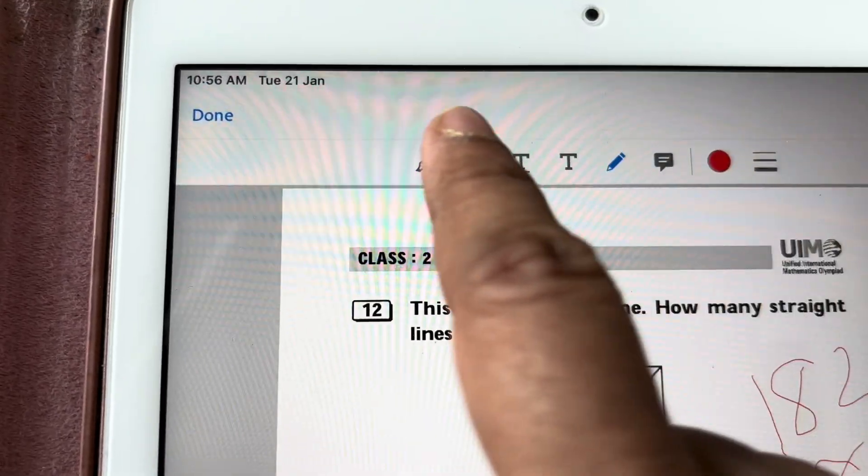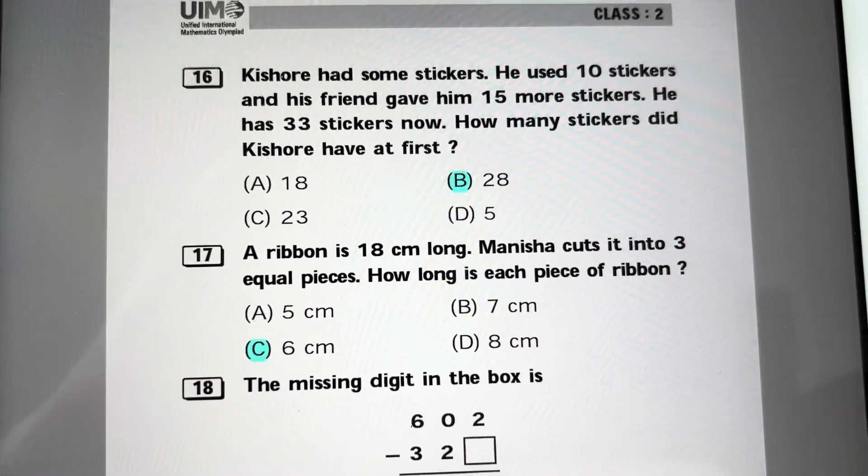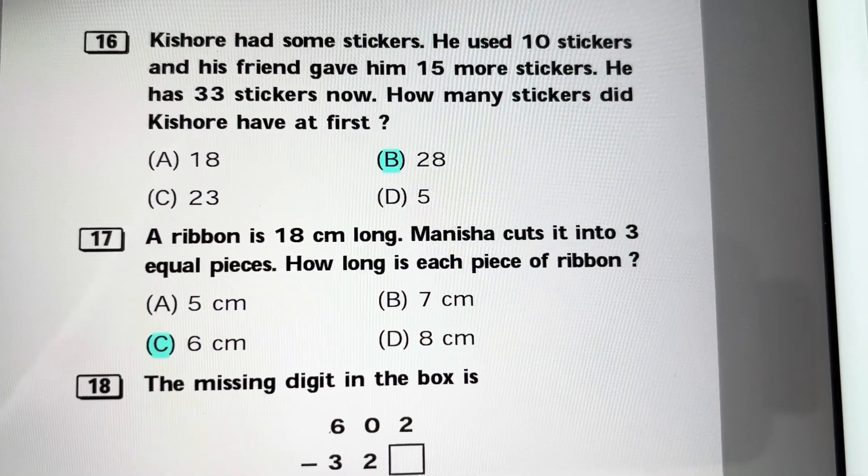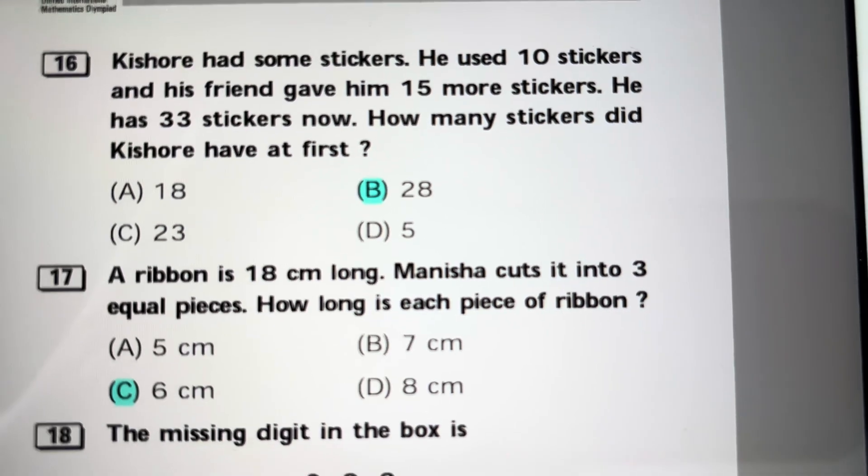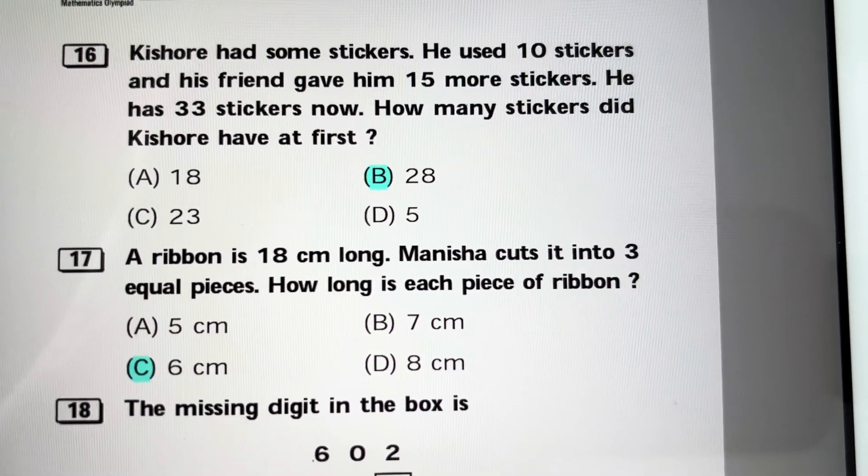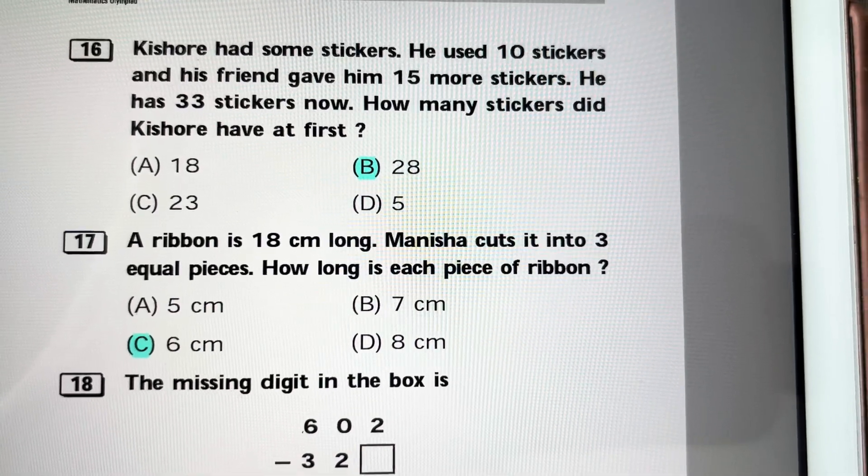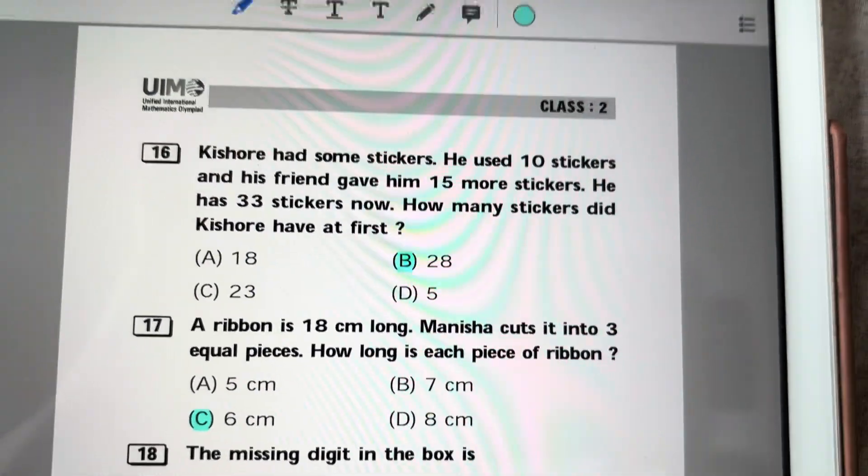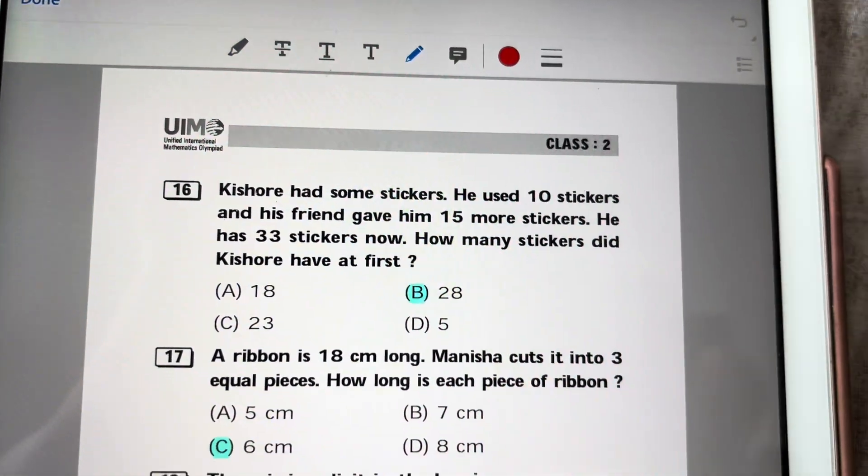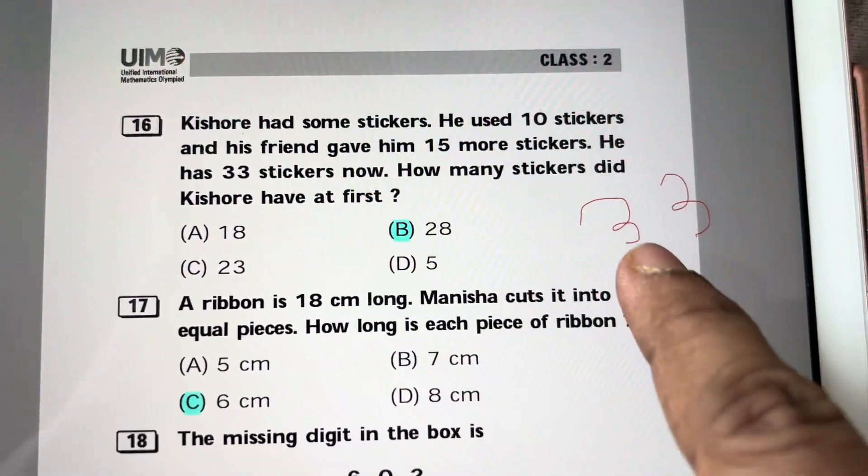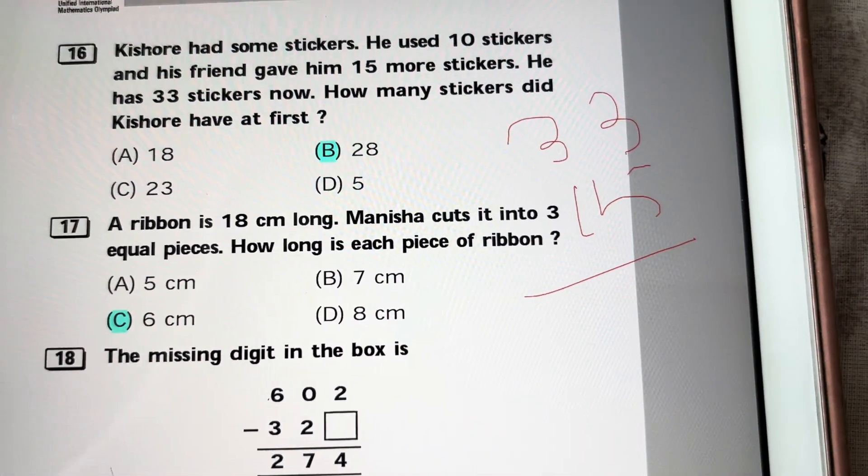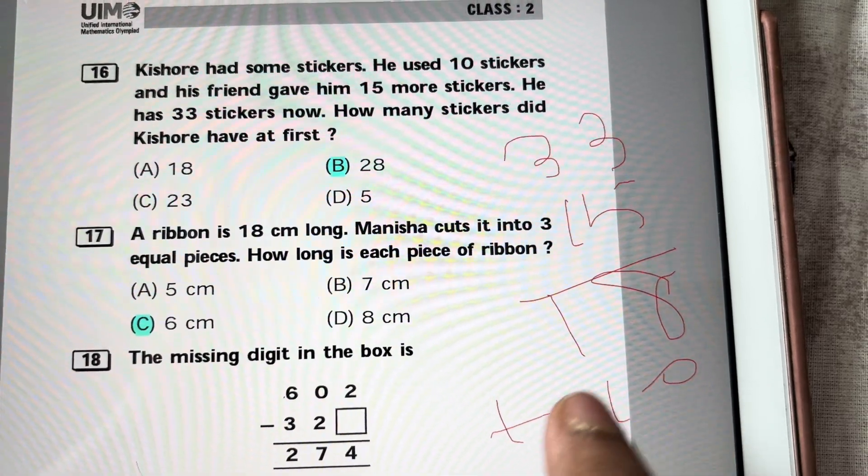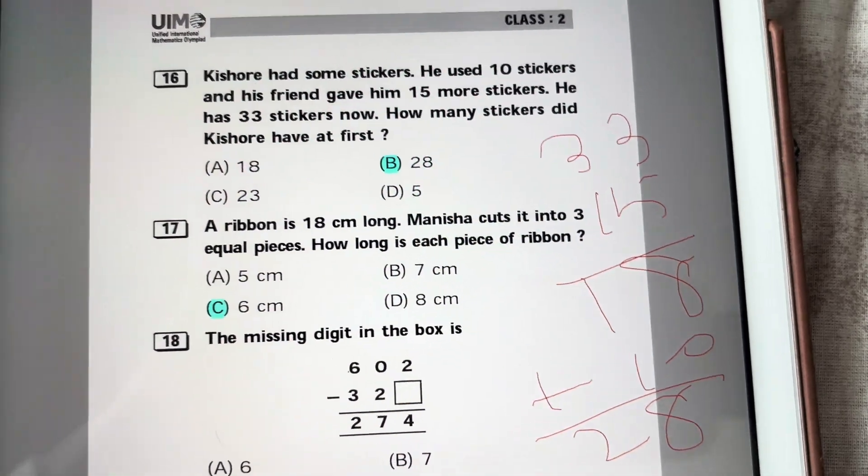Kishore had some stickers. He used 10 stickers and his friend gave him 15 more stickers. He has 33 stickers now. How many stickers did Kishore have at first? His friend gave him 15 stickers. Now he has 33 stickers. Before his friend gave him 15 stickers, he had 33 minus 15, that is 18 stickers. And before using 10, he had 28 stickers. So the answer is 28.